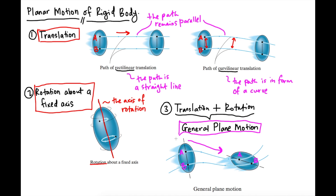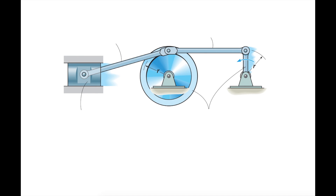In summary, there are three types of rigid body planar motion. First, translational motion, which can be divided into rectilinear translation (straight-line path) and curvilinear translation (curved path), but in both cases the paths of any two points remain parallel throughout the motion. Second, rotation about a fixed axis, where the rigid body rotates about a fixed axis. Third, general plane motion, which is the combination of translation and rotation.